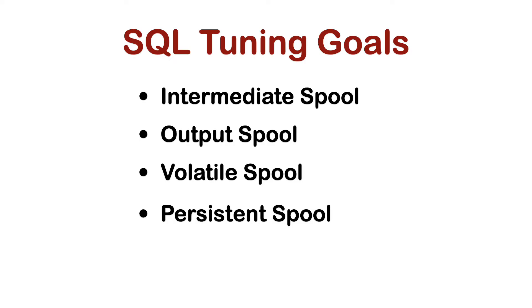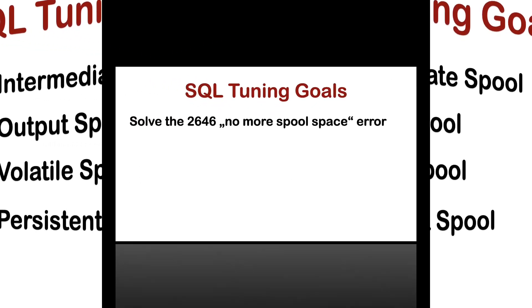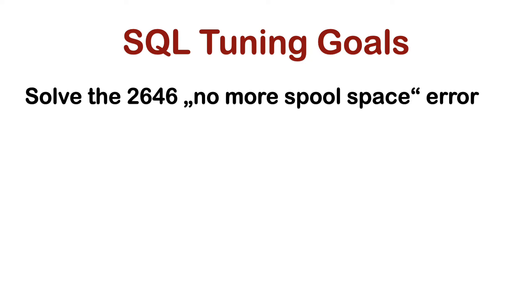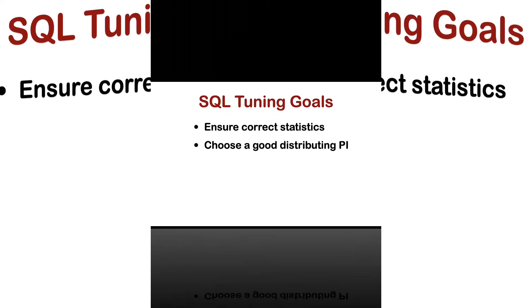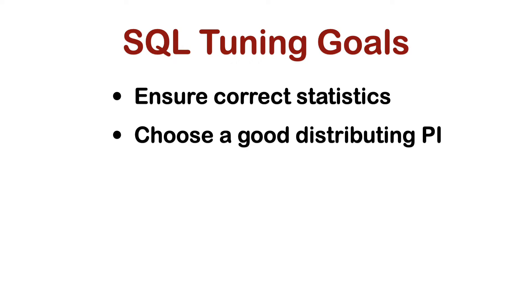Finally, we come to how to solve the Teradata spool space error — Failure 2646: no more spool space. No more spool space can be triggered by different problems. Here are some ideas on how to avoid them. Ensure up-to-date statistics: current statistics are essential so that the optimizer does not copy large amounts of data between the amps. Choose a good primary index that distributes rows evenly across all amps. Also, prevent the system from getting into a situation where spool space is no longer available — for example, through a spool reserve database.